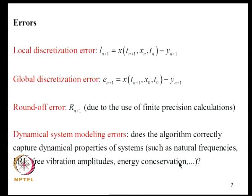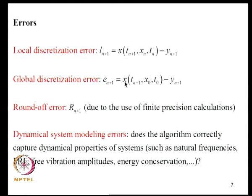Regarding errors, we define the local discretization error as X(XN, TN) minus YN plus 1, meaning the error in moving from TN to TN plus 1. The global discretization error arises when moving from T_naught all the way to TN plus 1 covering all preceding steps. There is also round-off error due to finite precision calculation — either double or single precision, typically double — which is inevitable and denoted RN plus 1.